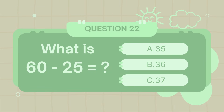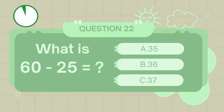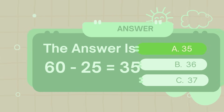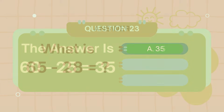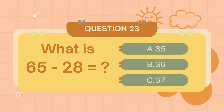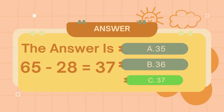What is 60 minus 25? The answer is 35. What is 65 minus 28? The answer is 37.